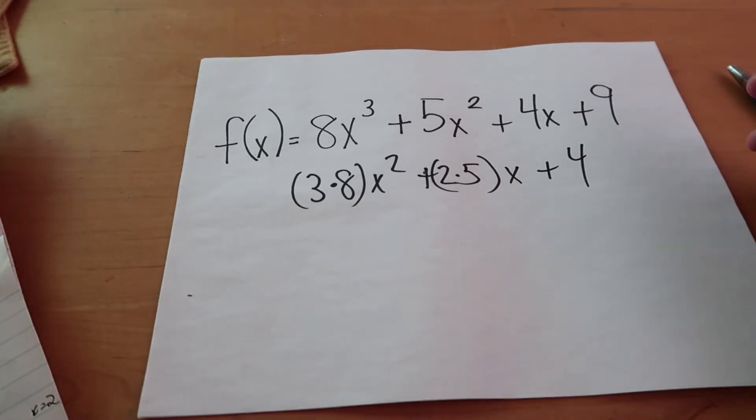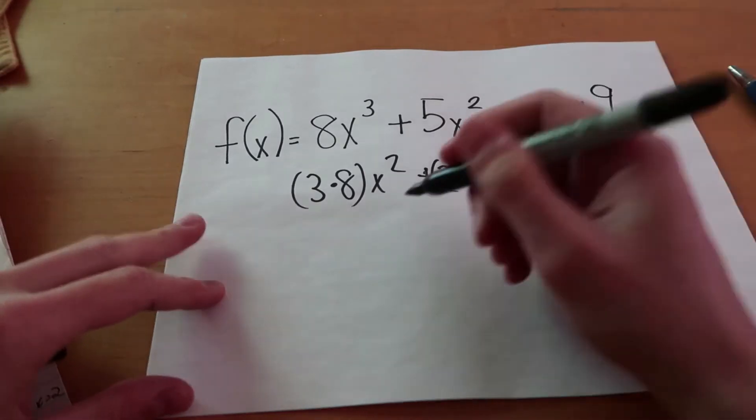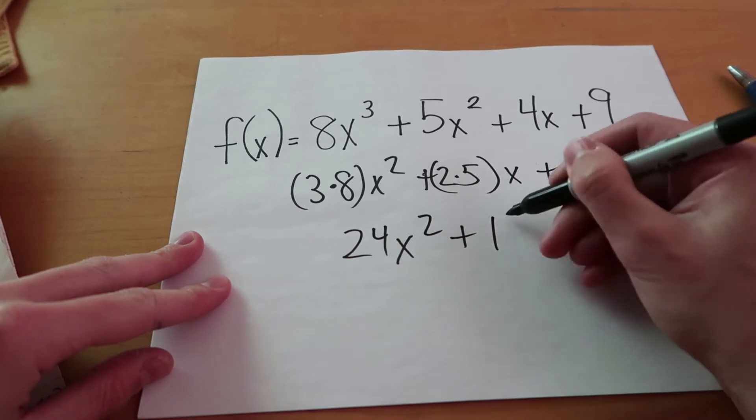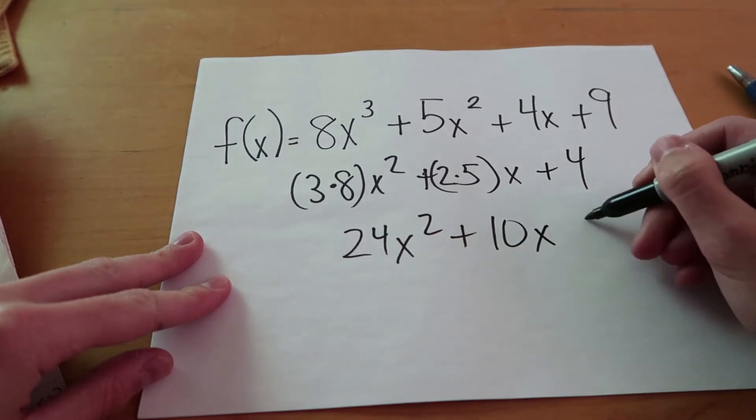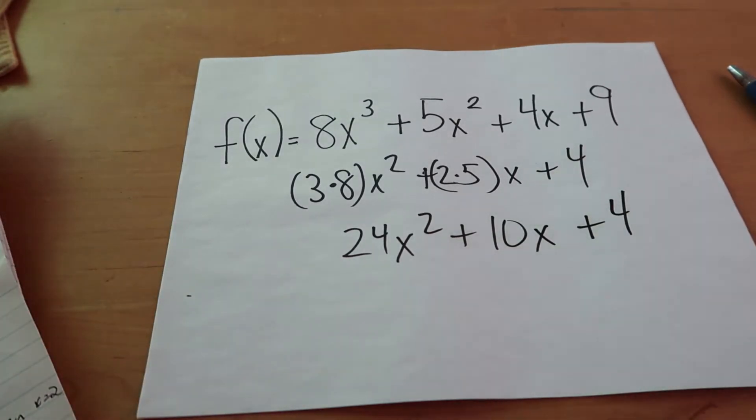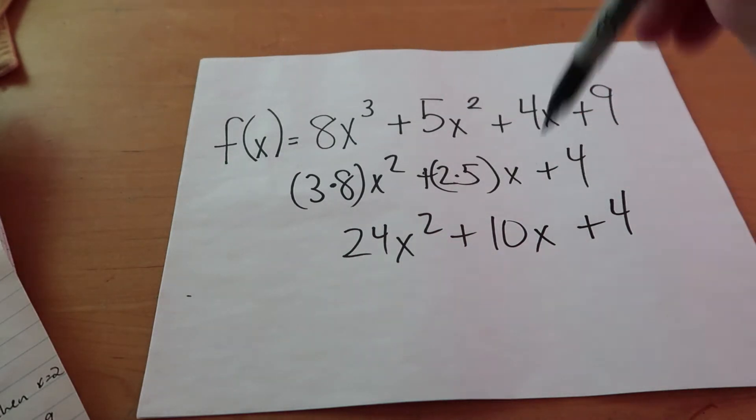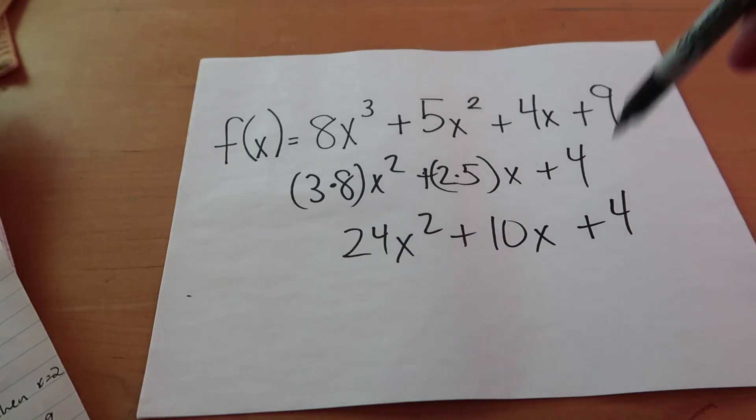So the 9's out. Now, let's simplify this, so we'll say 24x squared plus 10x plus 4. So we simplified this, we found the derivatives of each of the terms. When you have a constant, you just discard it. So there's a name for that, I forgot what it is. But anyway,